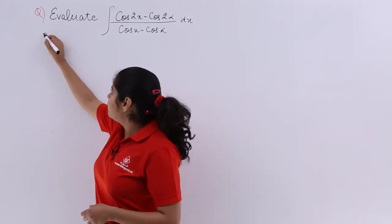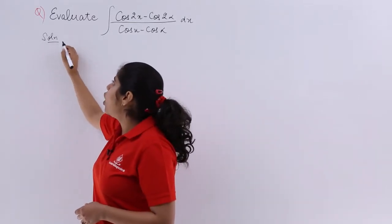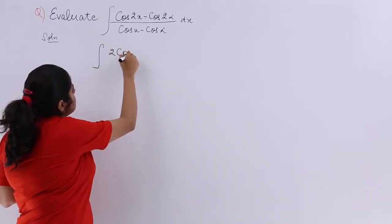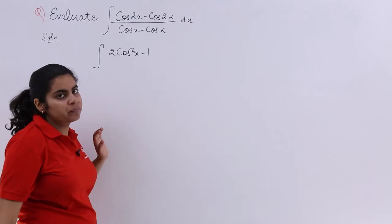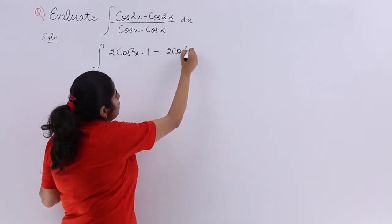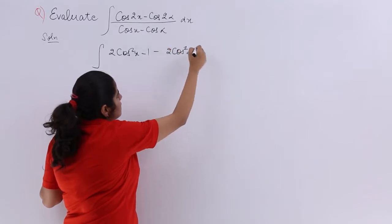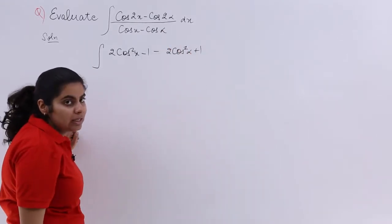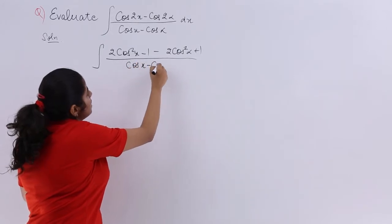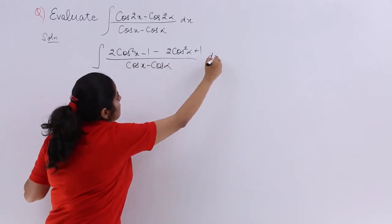The approach we will use is the formula for cos2theta. We have cos2x equals 2cos²x minus 1, and cos2alpha equals 2cos²alpha minus 1, but since minus is outside, it becomes plus 1. In the denominator, things do not change: cosx minus cosalpha, and dx as it is.